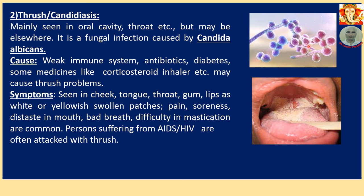Symptoms: Seen in cheek, tongue, throat, gum, and lips as white or yellow swollen patches. Pain, soreness, distaste in mouth, bad breath, and difficulty in mastication are common. Persons suffering from AIDS and HIV are often attacked with thrush.